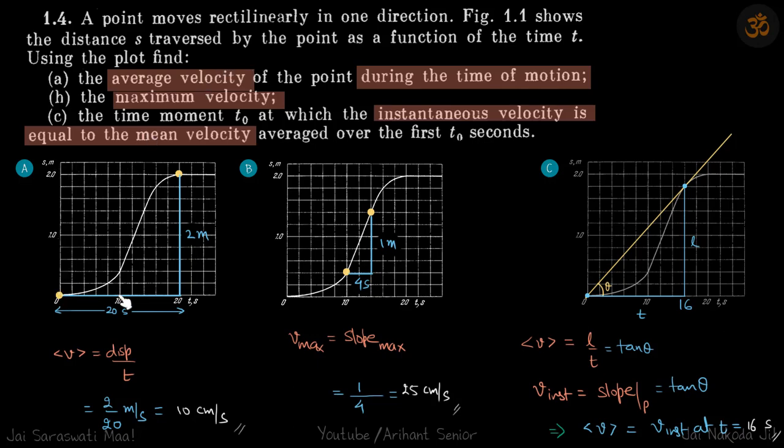We are given a displacement versus time graph and we need to find certain values. First, we need to find the average velocity of the point during the time of motion.